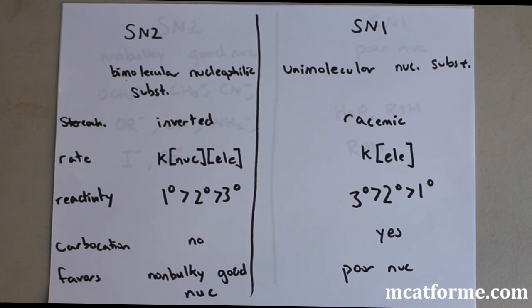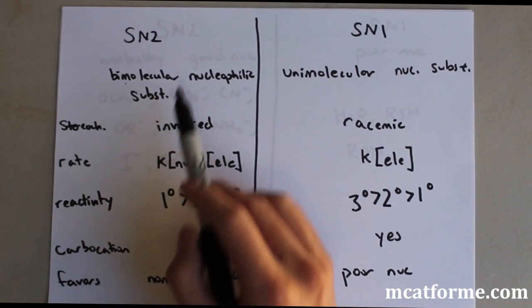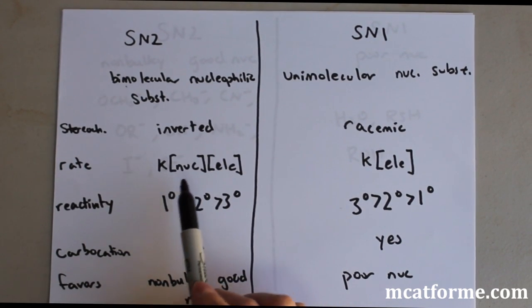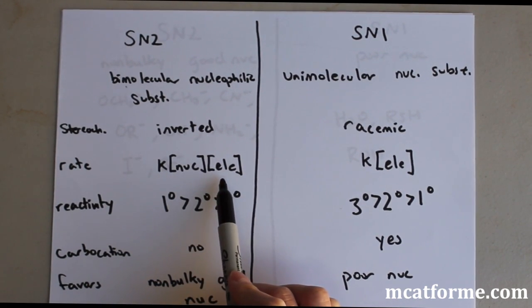The first thing we're going to be talking about is the name. The name for SN2, it gets the name because it's a bimolecular nucleophilic substitution. And what that relates to is the fact that this rate is dependent on the nucleophile and also on the electrophile.